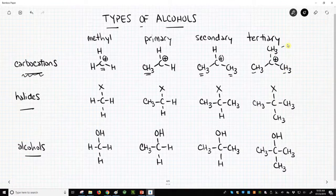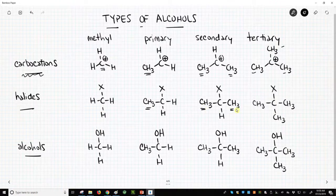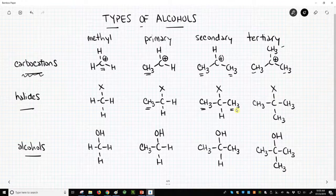The same goes for how we classify halides. Halides could be methyl, primary, secondary, or tertiary depending on how many carbon groups we have around the carbon that bears the halogen.